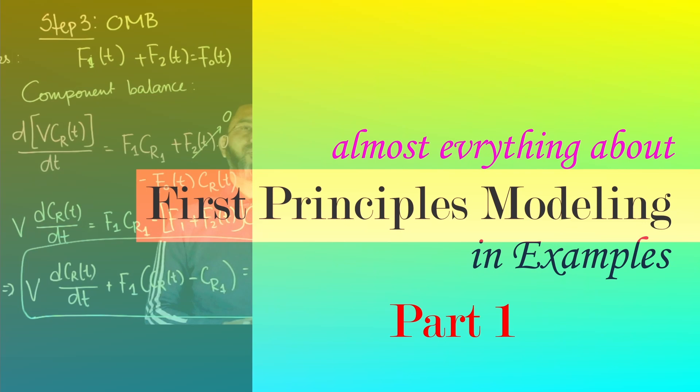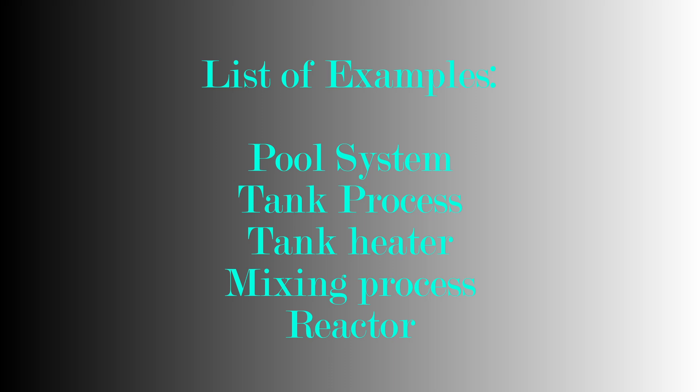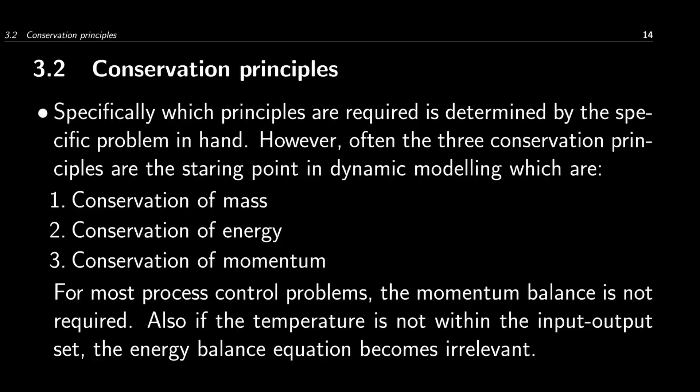In this series of talks, we'll cover fundamentals about first principles modeling using a set of examples. We'll start with a simple example of a tank and pool process and go all the way to deriving the model equations for temperature and composition control of reactors. We'll see the use of conservation principles, mainly conservation of mass and conservation of energy. Conservation of momentum becomes irrelevant in most chemical process systems.